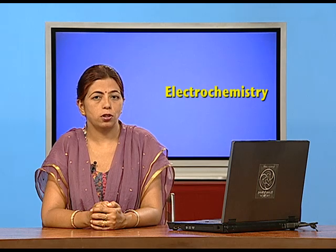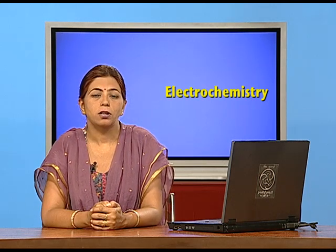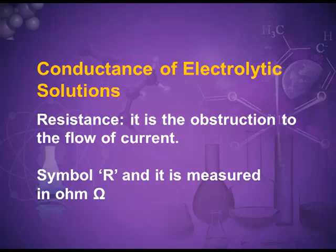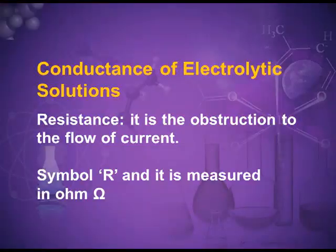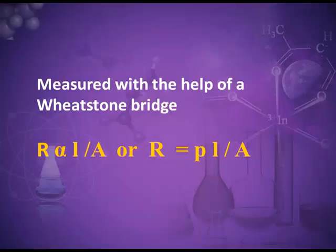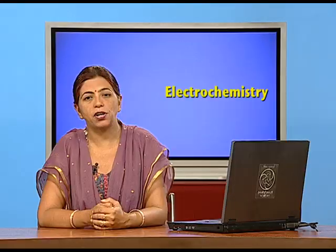Conductance of the electrolytic solution — let me explain a few terms. Resistance is the obstruction to the flow of current. When the current flows through a conductor, the conductor also offers some resistance or obstruction to the flow of current. The symbol for resistance is R and its unit is ohm. Wheatstone bridge is the instrument used to measure resistance. Resistance R is directly proportional to the length of the conductor and inversely proportional to the cross-sectional area A of the conductor.